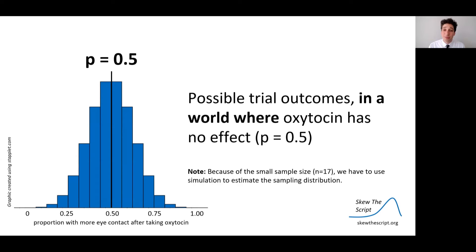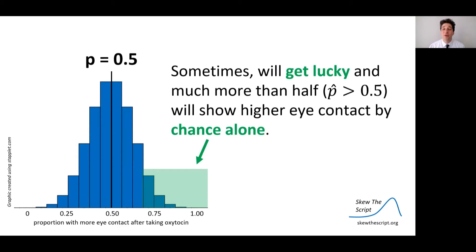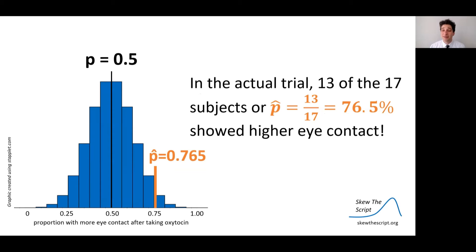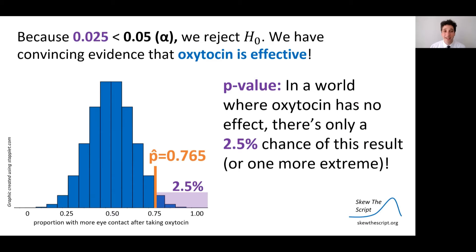This is a simulation of possible trial outcomes assuming the null — running thousands of times. Most simulated results are close to 50%, but sometimes we get unusually high results by chance alone. In the actual trial, 13 of the 17 patients — about 76-77% — showed higher eye contact. The p-value was 2.5%: in a world where oxytocin has no effect, there's only a 2.5% chance of this result or more extreme. Since the p-value is lower than the typical alpha level of 0.05, we reject the null. We have convincing evidence that oxytocin is effective.